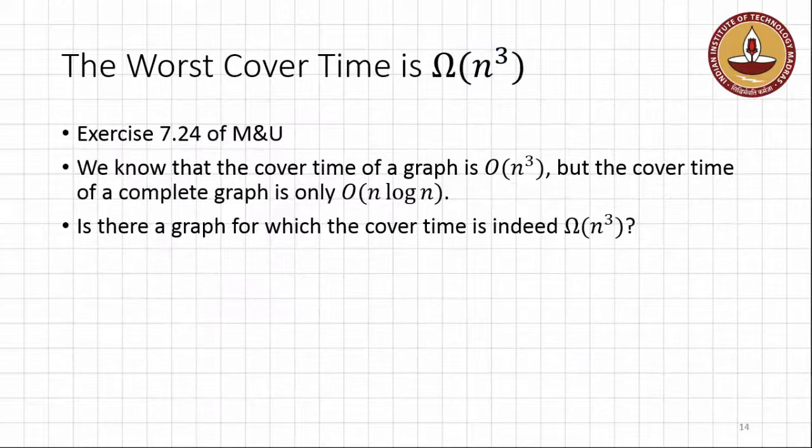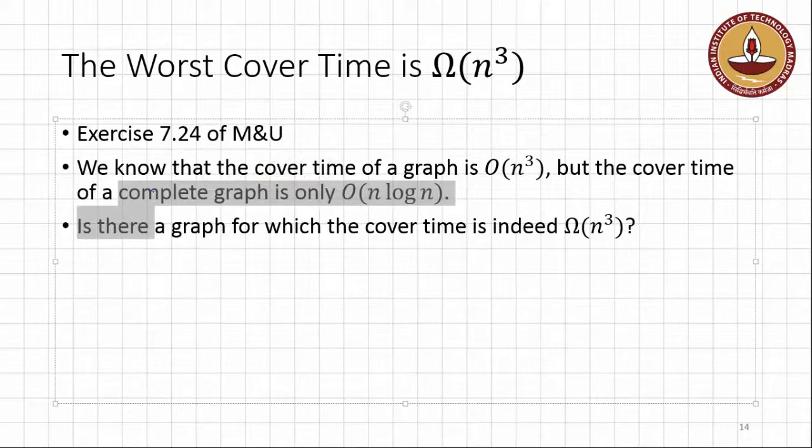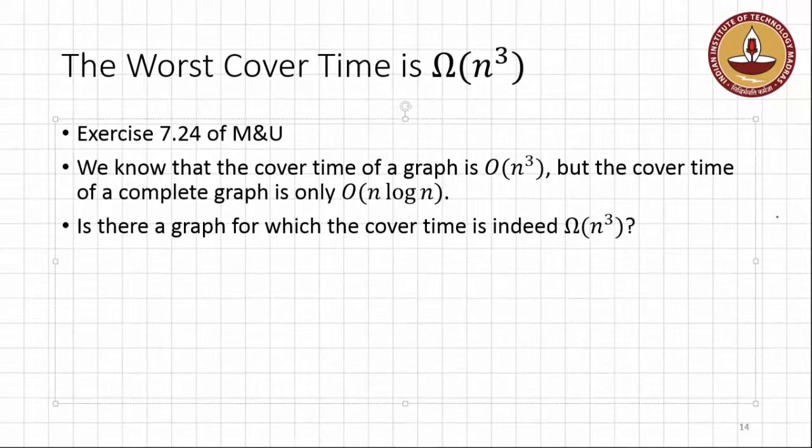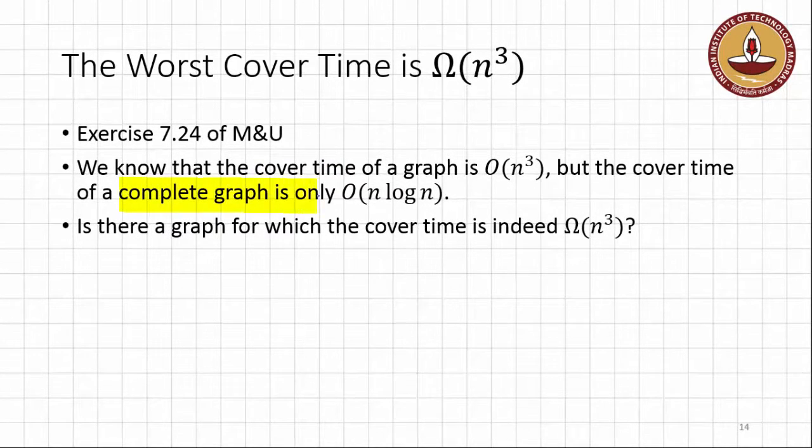Now, the interesting question, and this is a question based on exercise 7.24 of the Mitzenmacher-Upfal textbook, we know that the upper bound on the expected cover time is O(N³). And if you look at, for example, the complete graph on N vertices, the cover time there is just O(N log N). So some graphs have a very fast cover time.